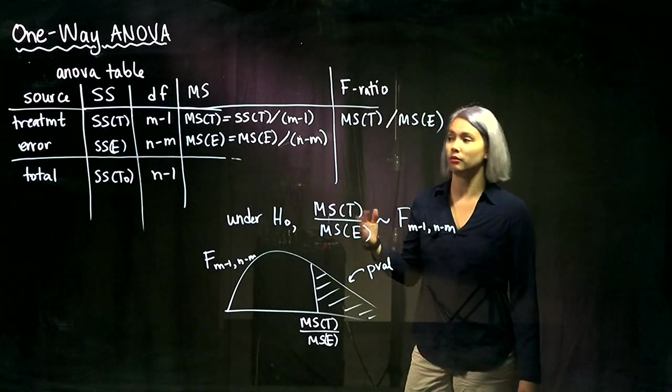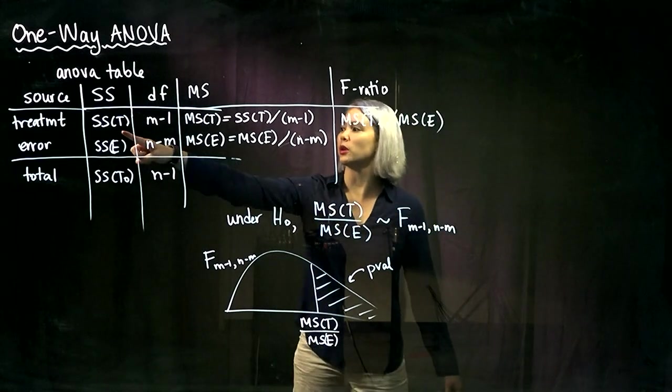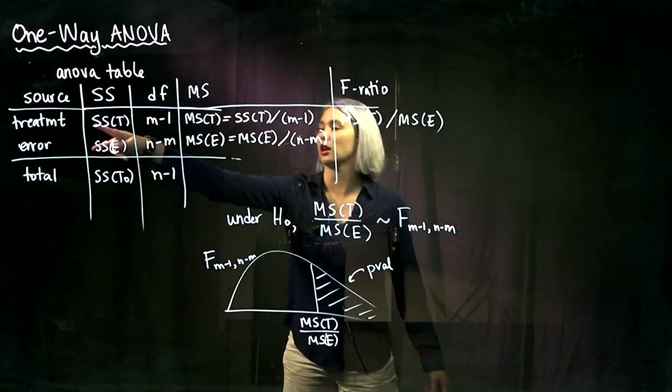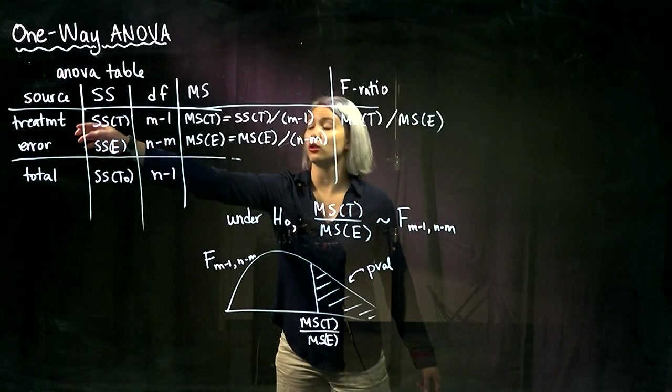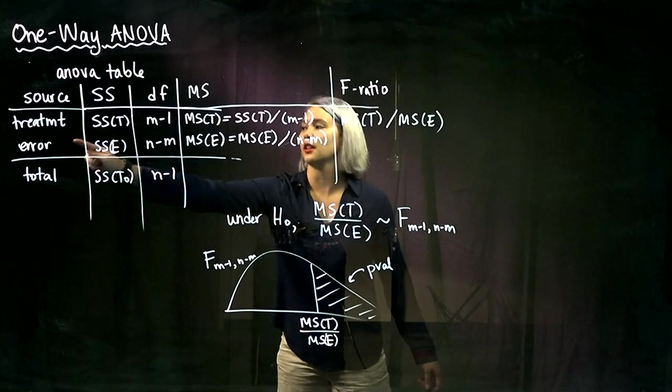So remember that we have the treatment sum of squares and the SSE, because we have two sources of variability, the treatment and the error.